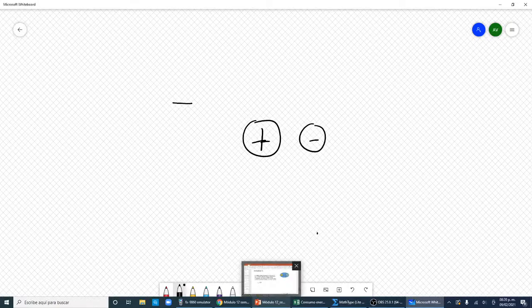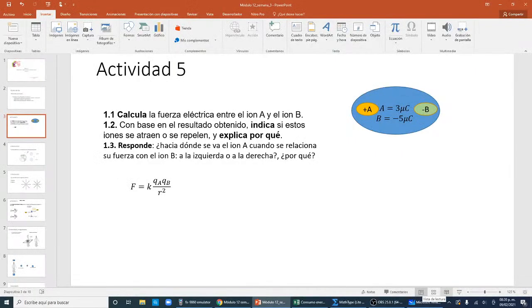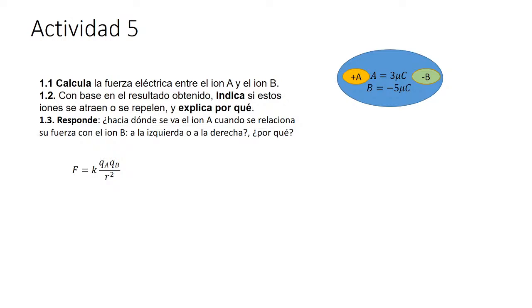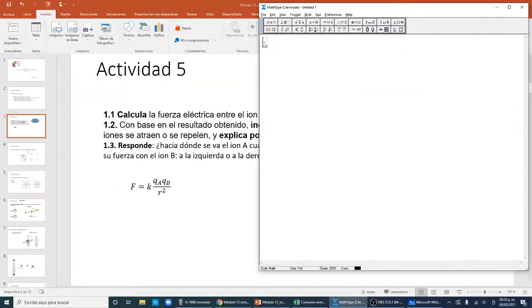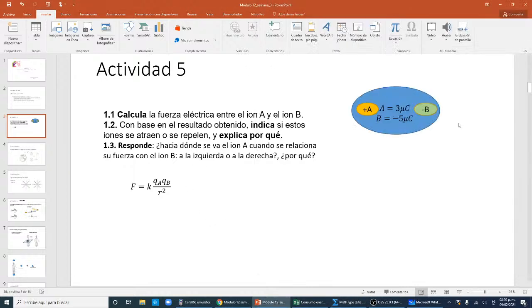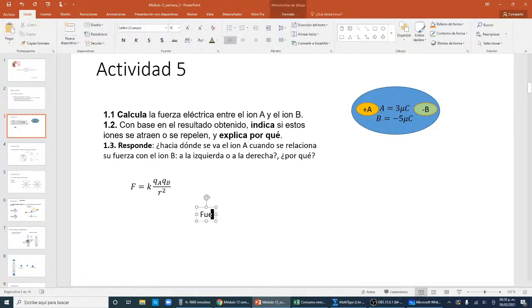También en un momento posterior los signos nos van a servir para identificar la dirección del vector. En el caso de la fuerza, si va hacia la derecha o hacia la izquierda; en el caso del campo eléctrico, de la misma manera. En principio, para el empleo de la ley de Coulomb no voy a necesitar considerar los signos en la aplicación de la fórmula. Los signos indican si es una fuerza de atracción o de repulsión. En este caso son cargas opuestas, entonces se trata de una fuerza de atracción.